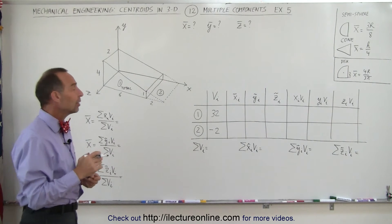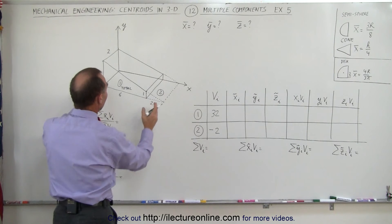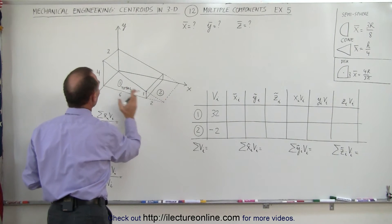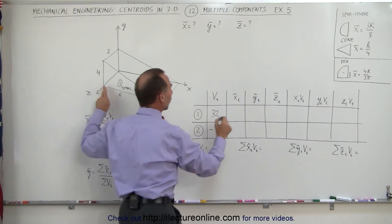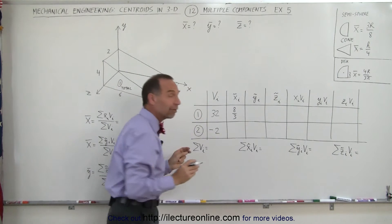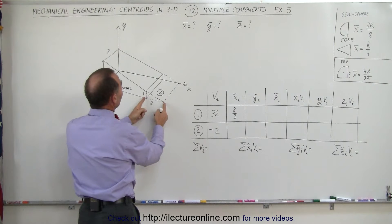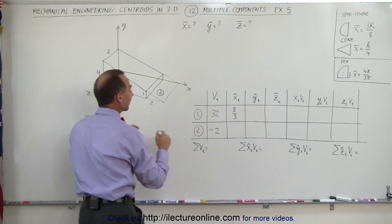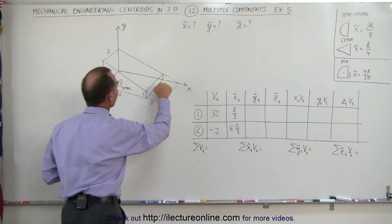Now to find the x, y, and z coordinates of each of the portions. To find the x-coordinate of the triangular slab, that would be one-third the distance from the base to the height — one-third the height. Since the height is eight, one-third of that would be eight over three. Remember we do that for the whole wedge, not just this portion. The center of the missing portion would be six plus one-third the distance from there to there — that would be one-third of two, or two-thirds — so that would be six and two-thirds.